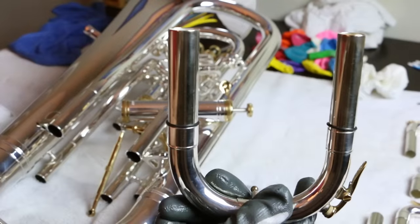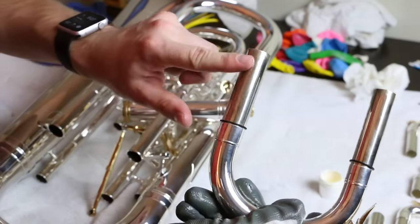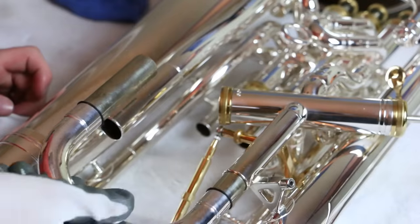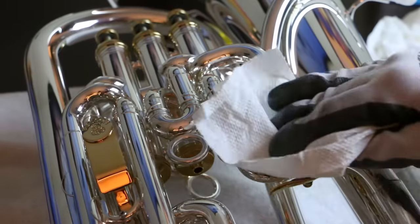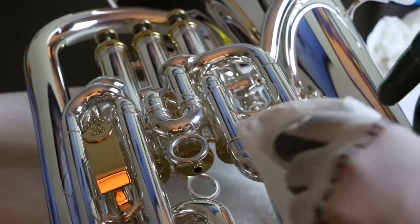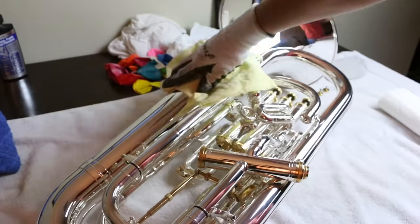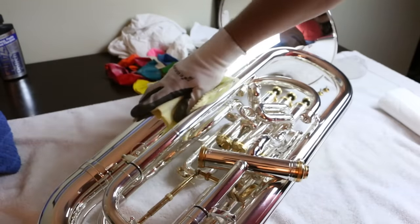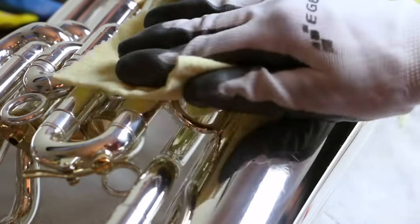Next up is the slides. Put a little bit of slide grease on each tube. Work each one individually and then work it as a whole. Wipe off any grease that builds up on the outside with a paper towel afterwards. Once the instrument is back together, grab a polishing cloth and give the horn a final wipe down.